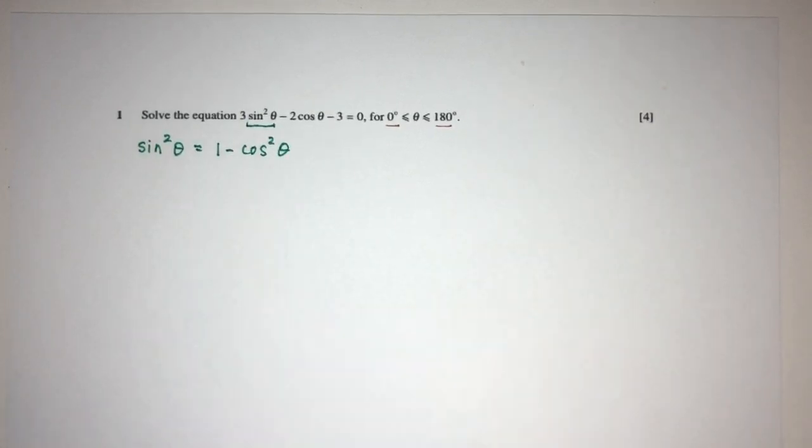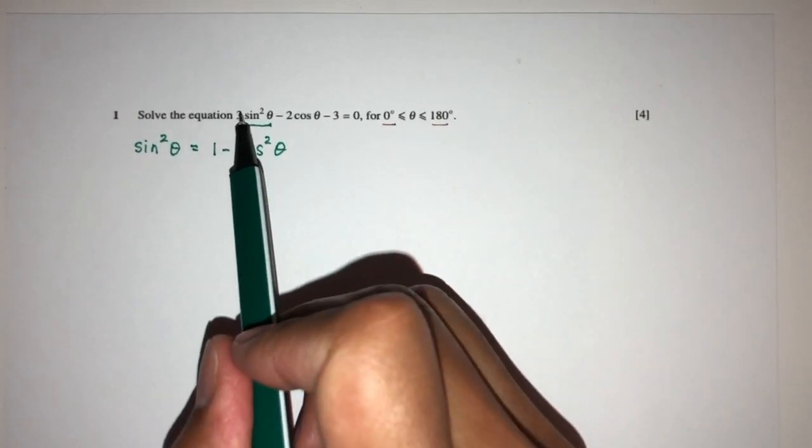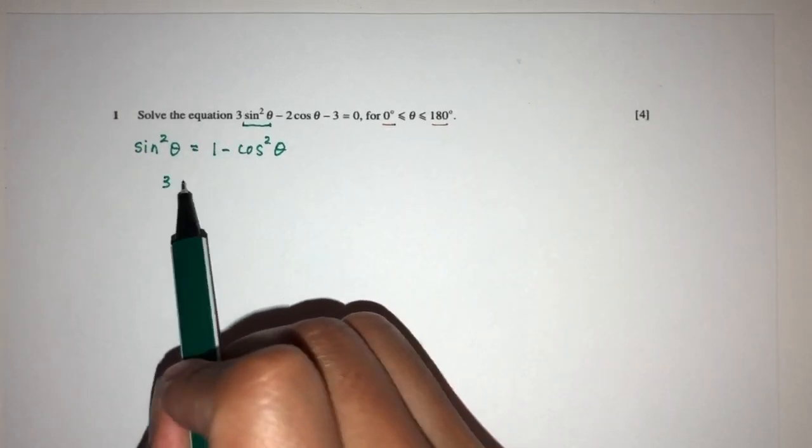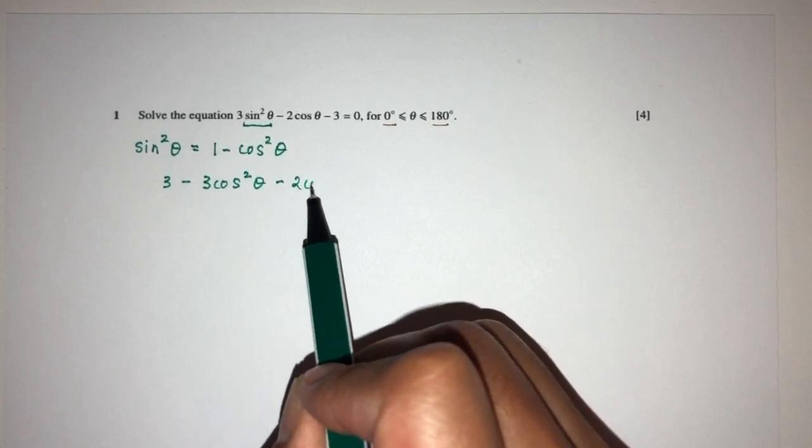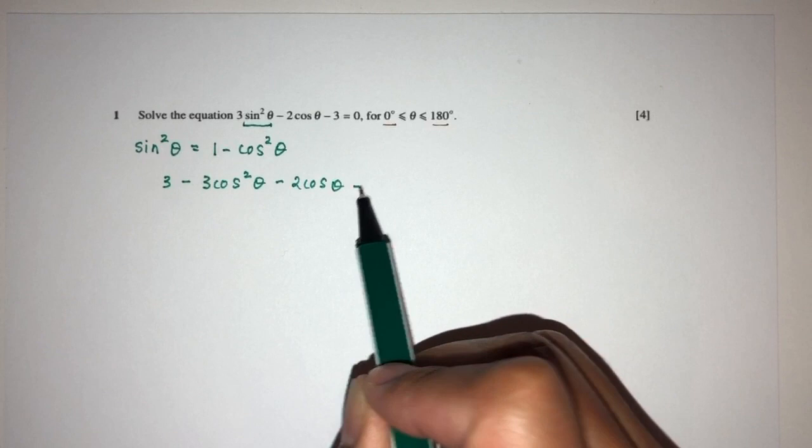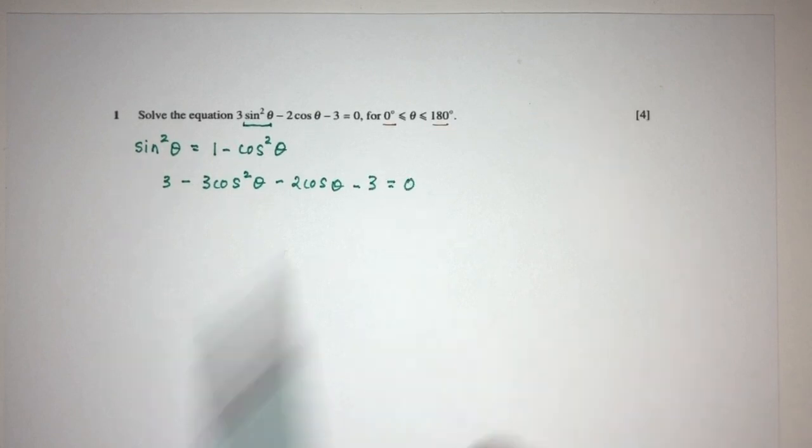So, we place back in the main equation, you will have 3 times this, that will be 3 minus 3 cos square theta